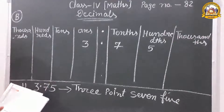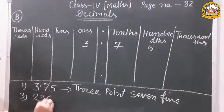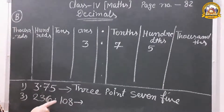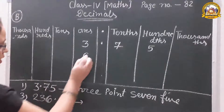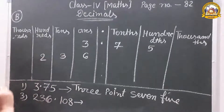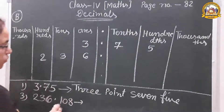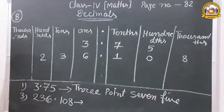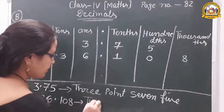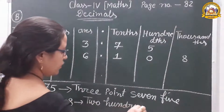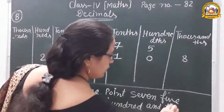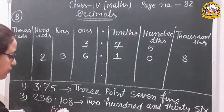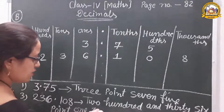Question 3: 236.108. Six on the ones place, three on the tens place, two on the hundreds place. After the decimal: 1 on the tenths place, 0 on the hundredths place, 8 on the thousandths place. In words: 'two hundred and thirty-six point one zero eight.'